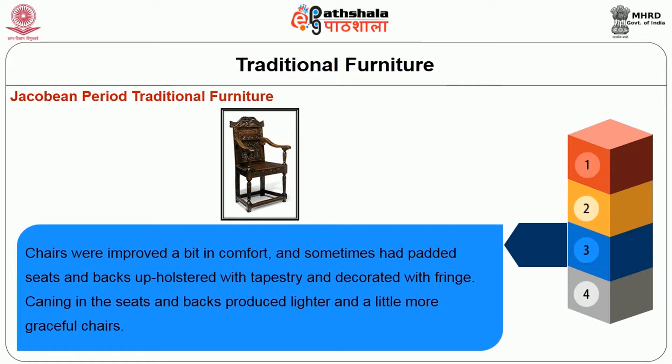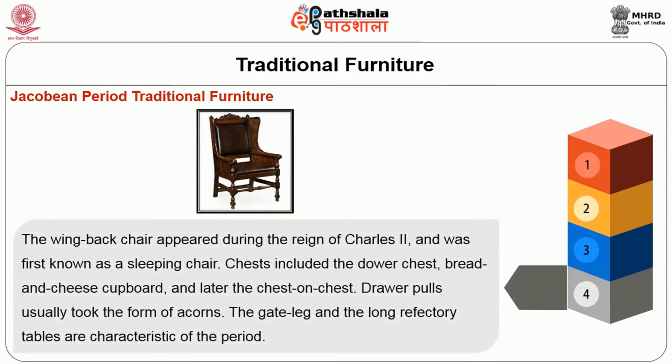Chairs were improved in comfort and sometimes had padded seats and backs upholstered with tapestry and decorated with fringe. Caning in the seats and backs produced lighter and more graceful chairs. The wing back chair appeared during the reign of Charles II and was first known as a sleeping chair. Chests included the Dover chest, bread and cheese cupboard, and later the chest on chest. Drawer pulls usually took the form of acorns. The gate leg and the long refectory tables are characteristics of the Jacobean period.